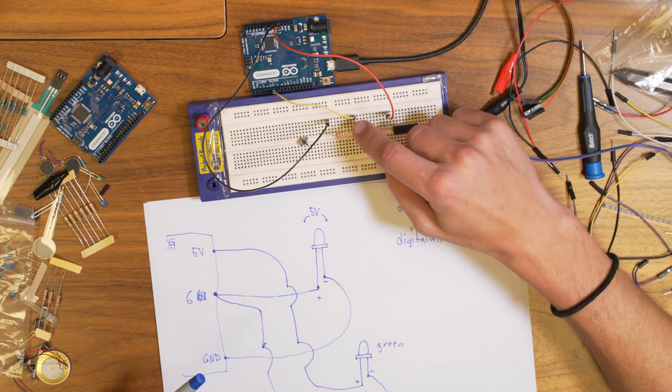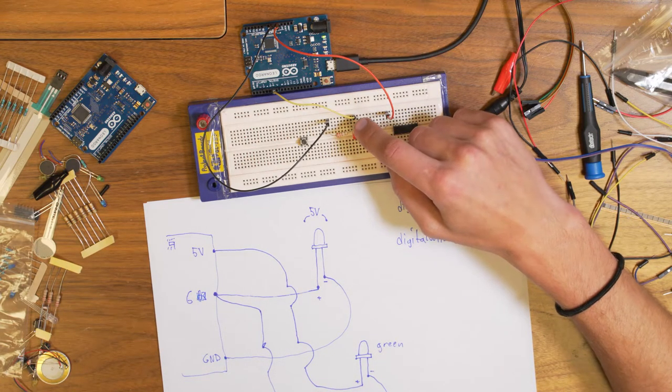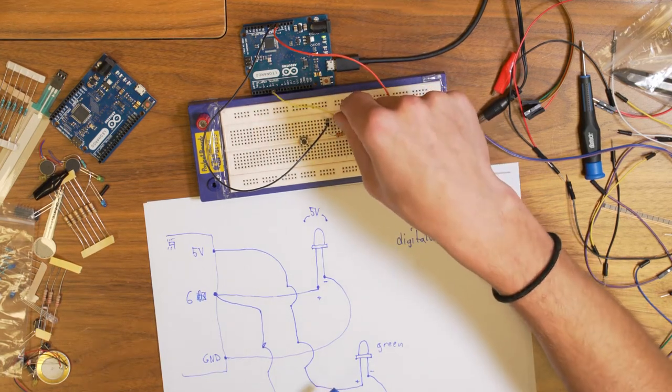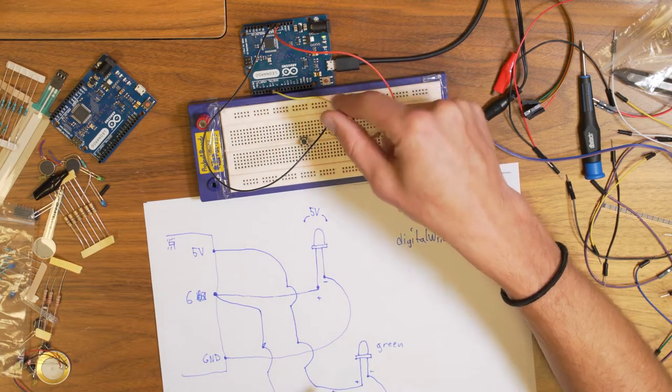And it goes through into the positive side of the green LED. And the minus point goes to this row with the yellow cable. The yellow cable goes to pin number 6.